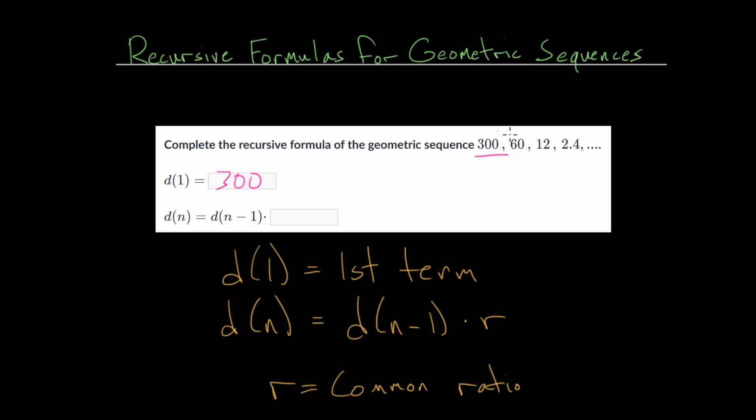And remember, to find that common ratio, that's the number that we're multiplying by to go from one term to the next. So we are always multiplying by that number r. And so to find it, we could set up an equation. So we can say our first term, 300, multiplied by that common ratio gives us 60. And solving this equation, divide each side by 300, you get 60 over 300. And this would simplify to one-fifth.